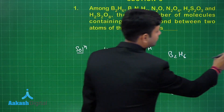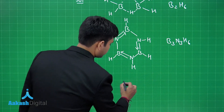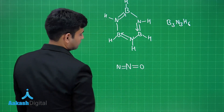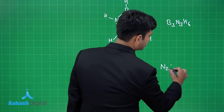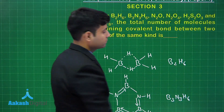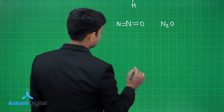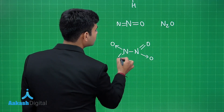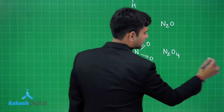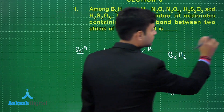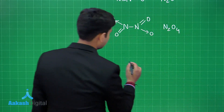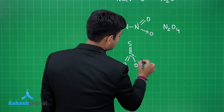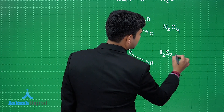Third is N2O — this is N2O. Fourth is N2O4 — this is N2O4. Then we have H2S2O3 — this is H2S2O3.